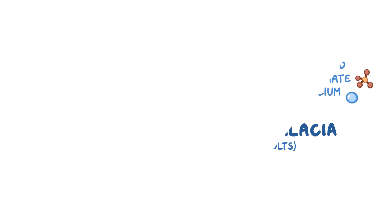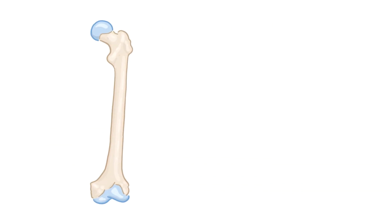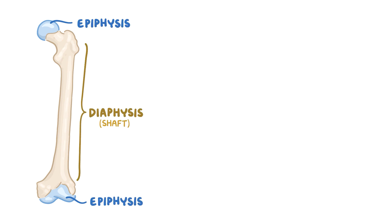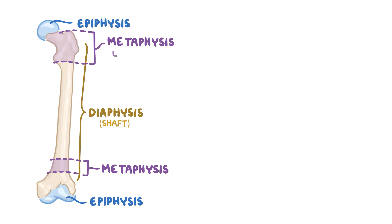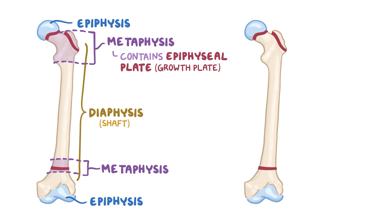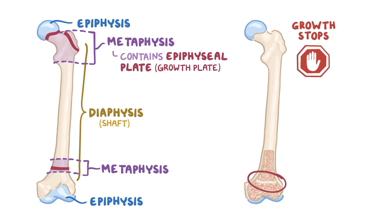But first, a bit about bones. Long bones like the femur are made up of two epiphyses, which are its ends, and the diaphysis, which is the shaft. Between each epiphysis and the diaphysis, there is a region called the growth plate, which is the part of the bone that grows during childhood. Once growth stops, the growth plate is replaced by an epiphyseal line, and this is known as epiphyseal closure.